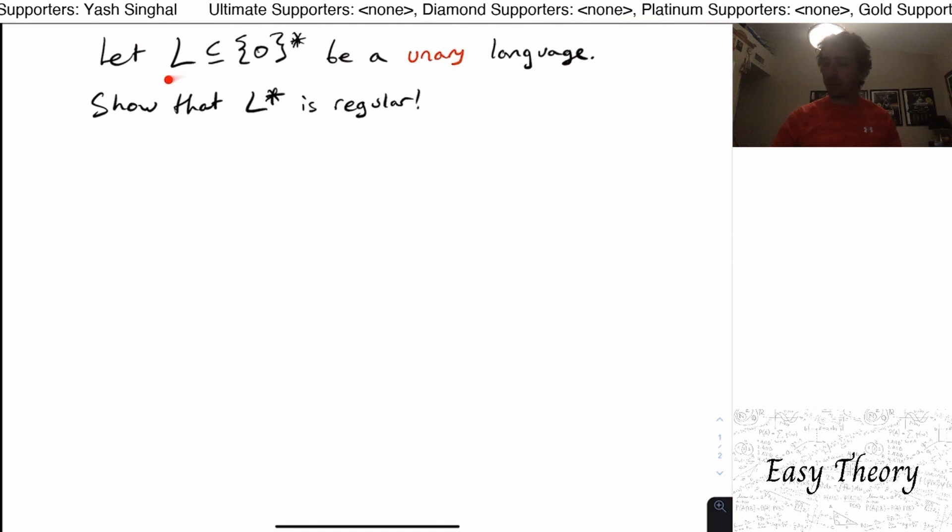And what is this problem? Suppose that we have this language L which is a subset of zero star. The zero can be anything but as long as there's only one character, then that's the language we're talking about and it's called a unary language.